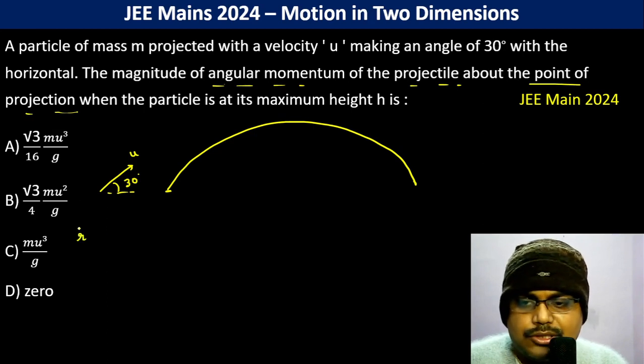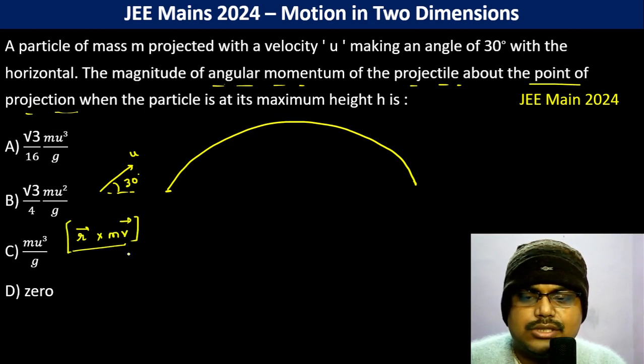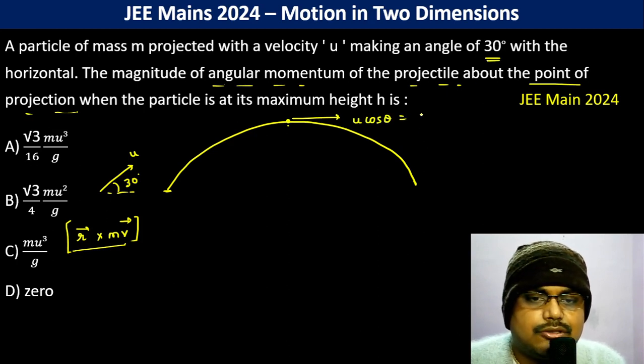Angular momentum is r cross M v. The velocity is in the direction, so velocity becomes u cos θ, which is 30 degrees, so u times √3/2.